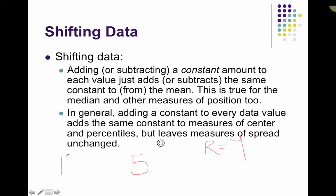If we add a constant — say we're adding 10 to every data value — my new minimum becomes 11 and my new maximum becomes 15. This still leaves me a range of 4, so the spread did not change.